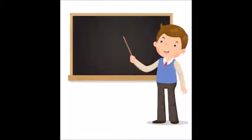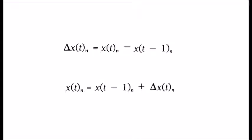Now I will show you how to construct the equation for latent difference score analysis. The equation is: the change in X equals the X variable captured at time 1 minus the previous value of X. By rearranging this equation, we get: X equals the previous value of X plus the change in X. This is how you construct the equation for a latent difference score model.